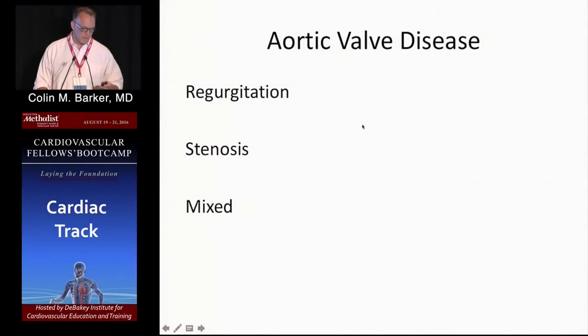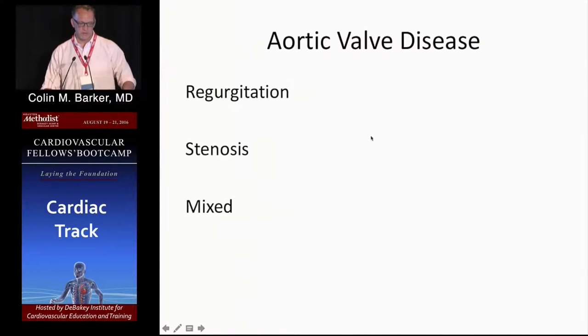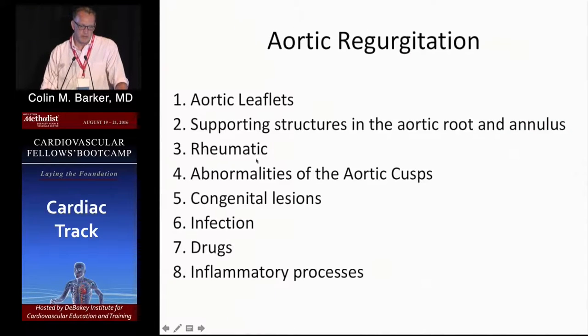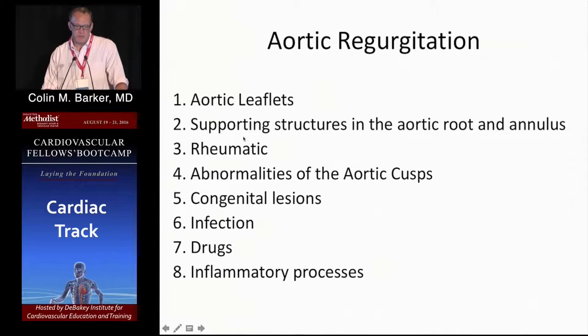Moving on to aortic valve disease. We're going to talk about regurgitant lesions, stenotic lesions, and not infrequently mixed lesions which will have a little bit of both. First, aortic regurgitation can have several etiologies — it can be primary leaflet issues, or issues with the supporting structures like the root and the annulus enlarging.